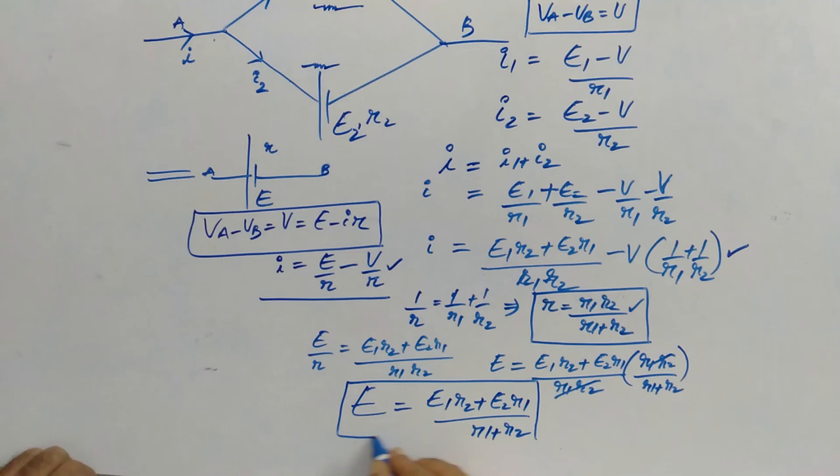So, this is the net EMF and this is the net resistance. So, this is the equivalent arrangement of when two cells are connected in parallel.